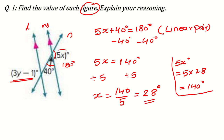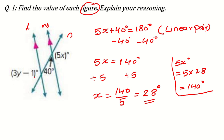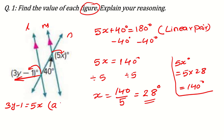After finding the value of 5x, do we have any relation with this 5x and this other angle? Yes — they are alternate exterior angles. Exterior means outside, so this angle is outside on one side and the other angle is also outside. Alternate means different sides: 5x is on the right side of this line and 3y minus 1 is on the left side. So they are alternate exterior angles and will always be equal. Therefore, 3y minus 1 equals 5x.